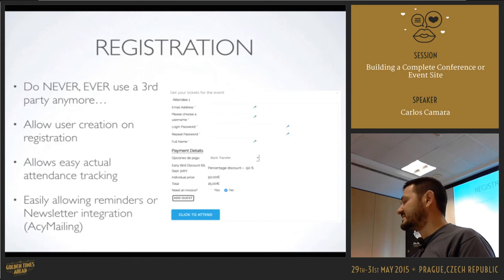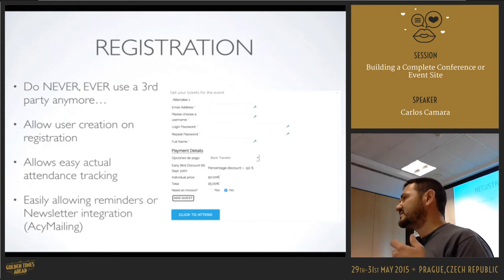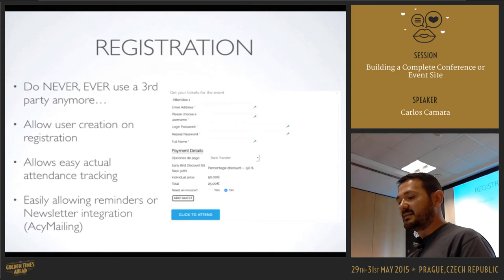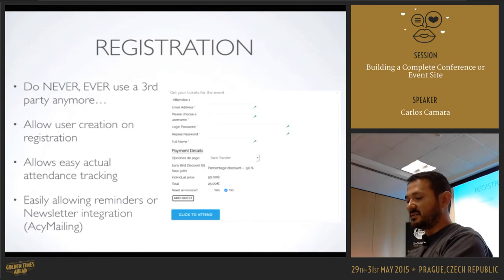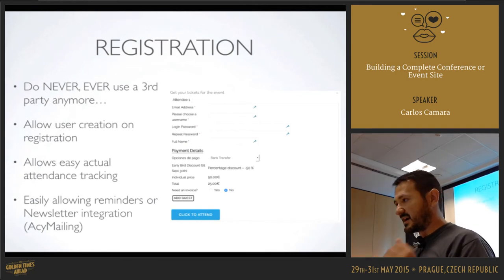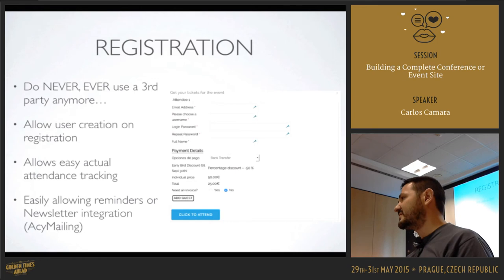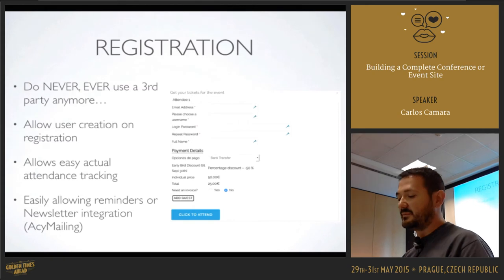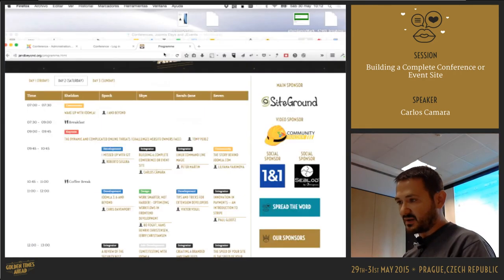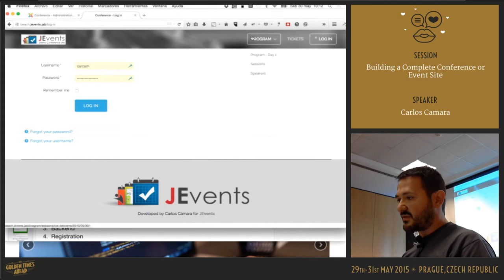You should never use a third-party service when you're already on Joomla — why pay someone for each registration? Tools like Eventbrite are fine for simple solutions, but if you expect a lot of attendees it becomes a problem. In Malaga we didn't charge for tickets, so paying to track attendance was painful. With our registration solution in JEvents, you can create user accounts on registration and do actual attendance tracking automatically.